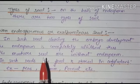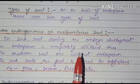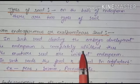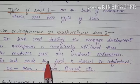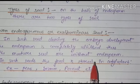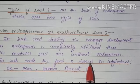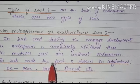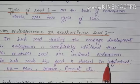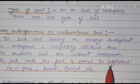Non-endospermous seeds are seeds in which endosperm is not present. During embryo development, the endosperm is completely utilized, and when the seeds are developed, endosperm is no longer present. The function of endosperm is to provide nourishment to the seed. In such seeds where endosperm is absent, the food is stored in the cotyledon, and the cotyledon provides nourishment and food to the seed.